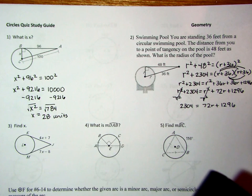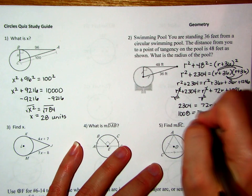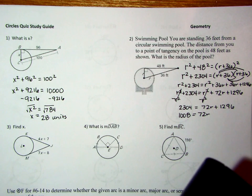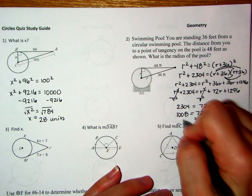What that leaves me with is 2304 is equal to 72r plus 1296. So we're going to take that 2304 minus 1296, and that's going to leave me with 1008 is equal to 72r. Now when we divide both sides by 72, they'll cancel on the right, and then the radius is going to be 14, and don't forget our unit feet.